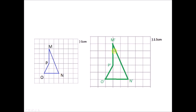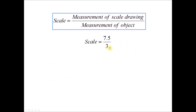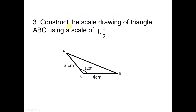For the second part of Question 2, draw the same shape on a bigger grid. The base of each unit is 2.5 cm, so 3 units gives 7.5 cm. The object base is 3 cm. Scale = measurement of scale drawing / measurement of object = 7.5 / 3, written in ratio form as 1 to some value by dividing. This gives the scale as your answer.